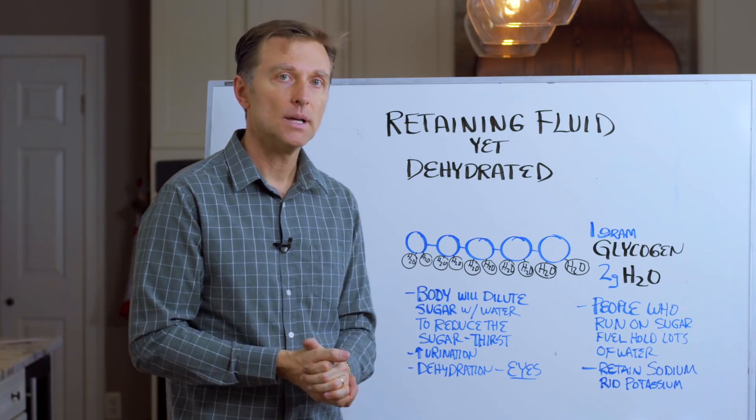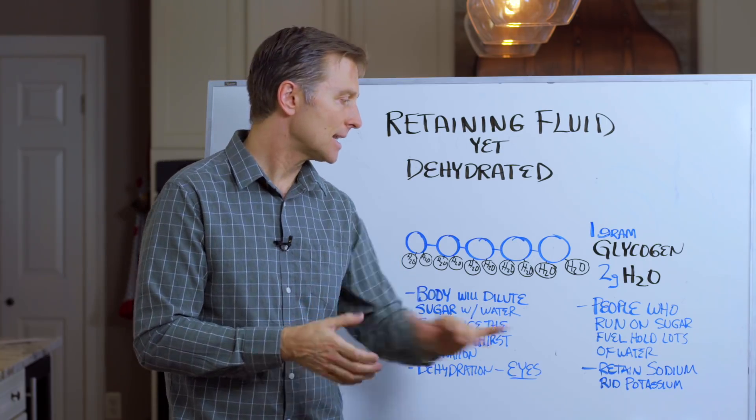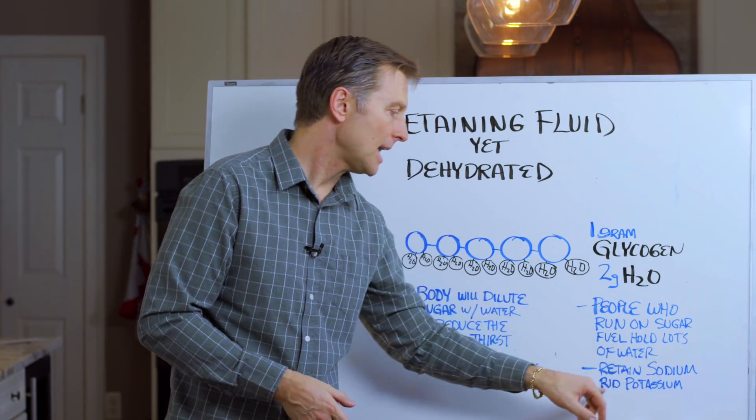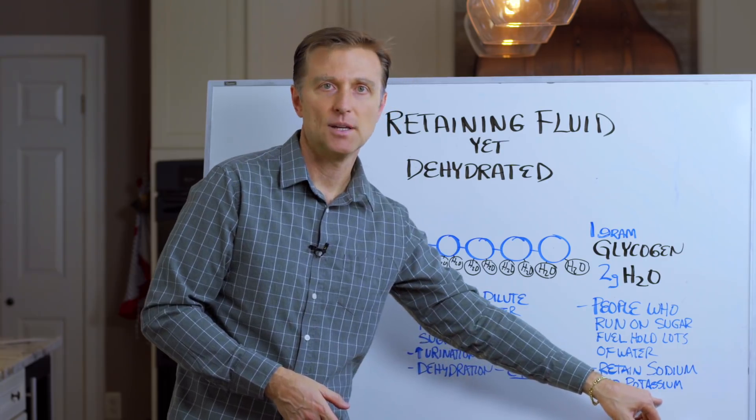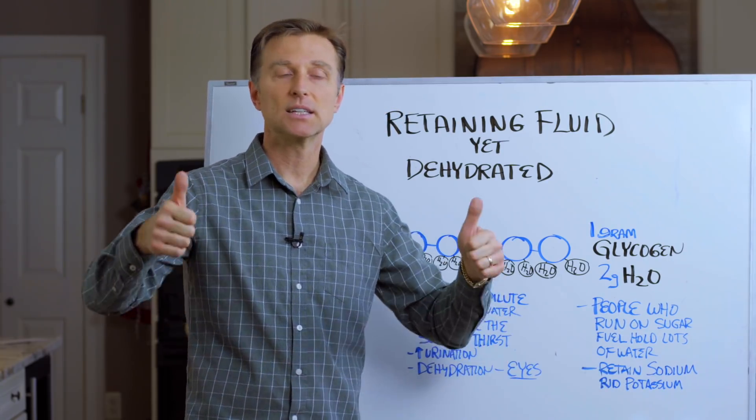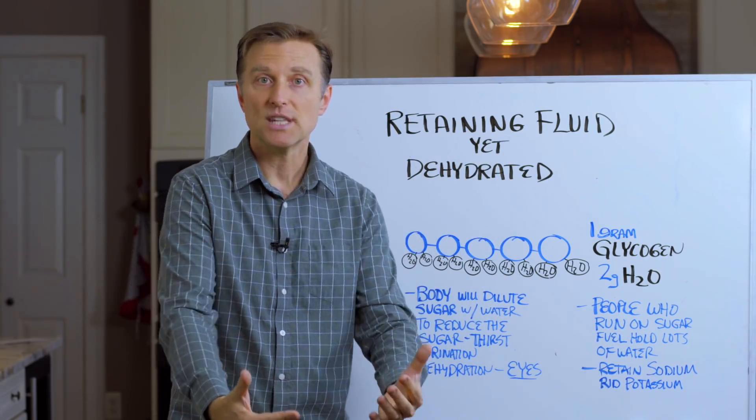Also, having too much sugar has a tendency to retain sodium and it rids potassium. So when you have high blood sugars and high insulin, you're dumping a lot of potassium. You're retaining sodium.